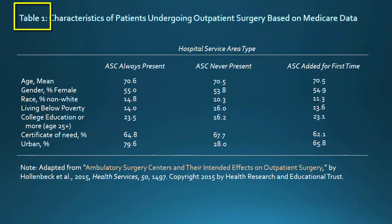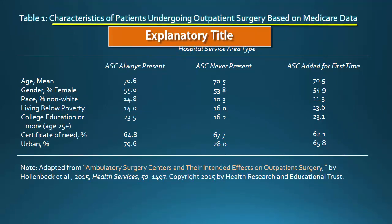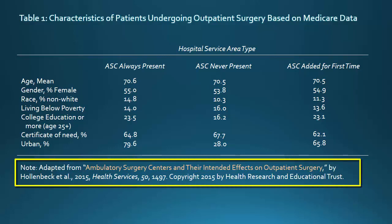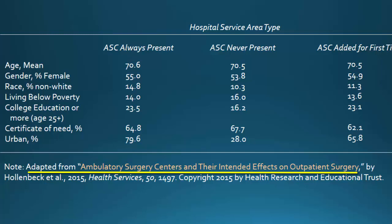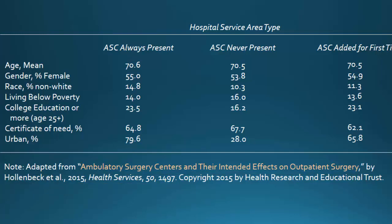This slide is devoted to a table. Like figures, tables must be numbered in sequence. Each should be displayed with an explanatory title — in this case, 'Characteristics of Patients Undergoing Outpatient Surgery Based on Medicare Data.' Tables also require a note, which appears directly beneath the table and provides any explanations needed, such as of abbreviations or symbols. The note must also contain a citation to the original source from which the table's data were taken, formatted according to APA style for that source type — in this case, a journal. In addition, a table note should also include copyright information at its end.